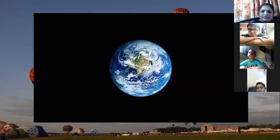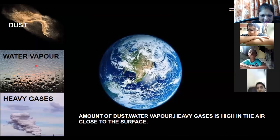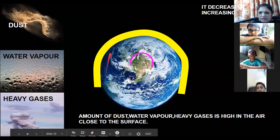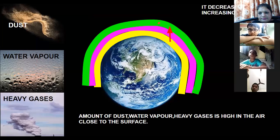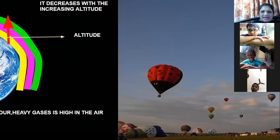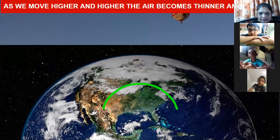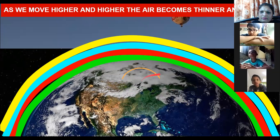Near the surface of the earth, you have dust particles, water vapor, and heavy gases. The amount of these three is very high near the surface of the earth, and as you go away from it, the amount will decrease. As you move higher and higher, air will become thinner and thinner — thinner means air will become rare.